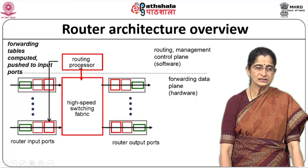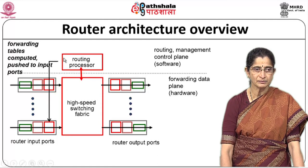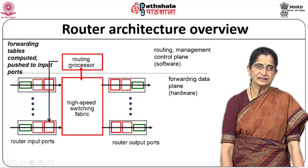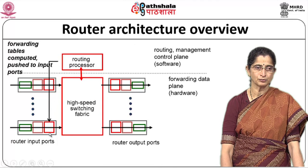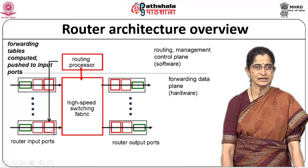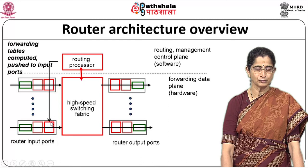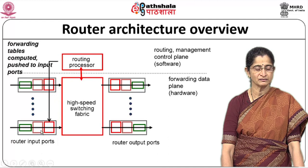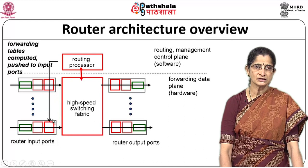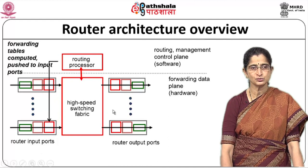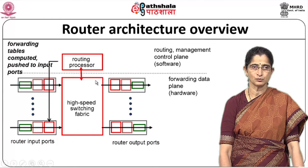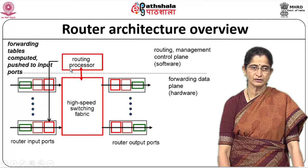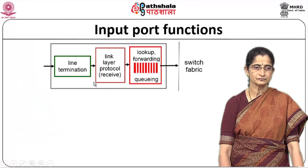The forwarding tables are computed normally by the routing processor under the control of the routing protocol, and that information is pushed to the input ports so the forwarding tables can be set up there. When a packet comes in, the input port looks at the forwarding table and based on that sends it to a corresponding output port. We have looked at the routing algorithms and what forwarding means, and now we are putting these two together.